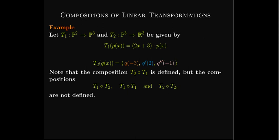Let's look at an example. We have two transformations: T1 goes from P2 into P3, so the domain is P2 and the codomain is P3. The second linear transformation T2 has domain P3 and codomain R3. Notice that the composition T2∘T1 is defined: T1's output is in P3, which is the input to T2, so that composition is defined.